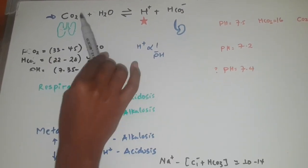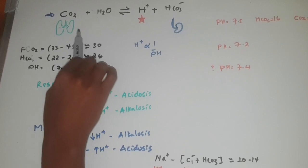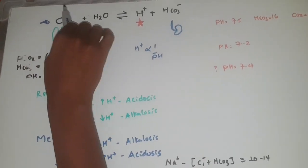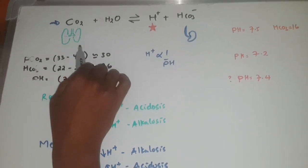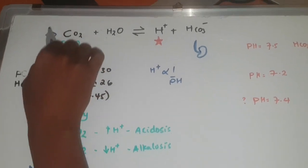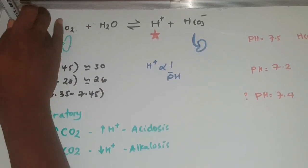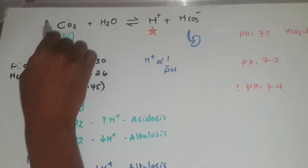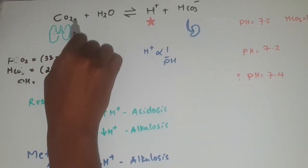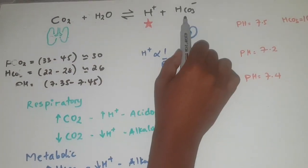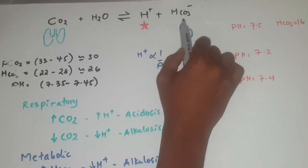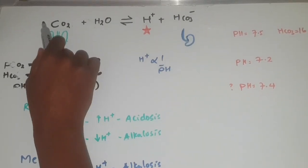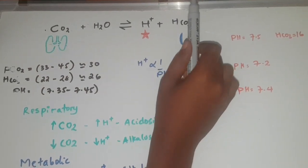Any respiratory acid-base disorder causes a change in carbon dioxide. Anything respiratory means carbon dioxide will change. Anything metabolic means bicarbonate is affected.